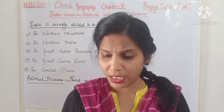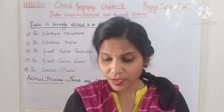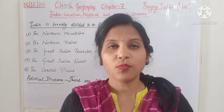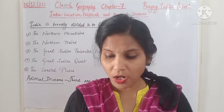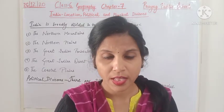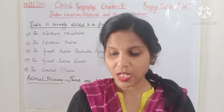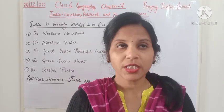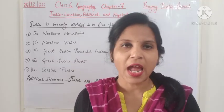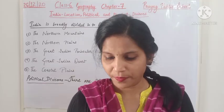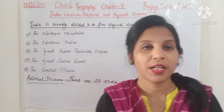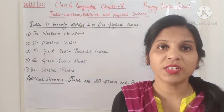If we look at the political map of India, we will see that the Tropic of Cancer — that is 23 and a half degrees north — passes almost through the middle of India, bisecting the states of Gujarat, Rajasthan, Madhya Pradesh, Chhattisgarh, Jharkhand, West Bengal, Tripura, and Mizoram.